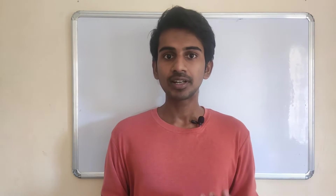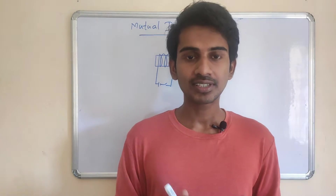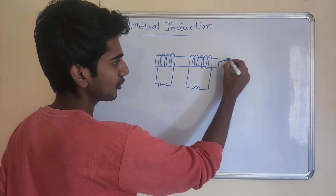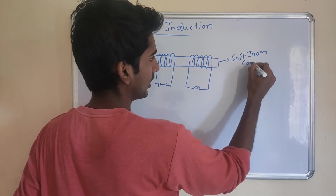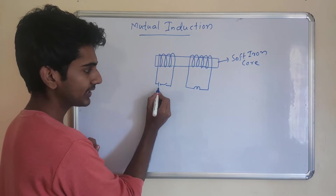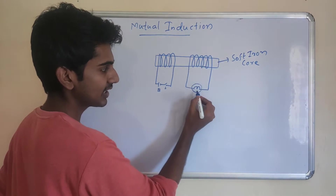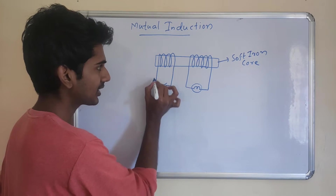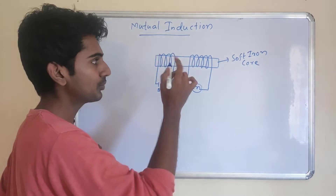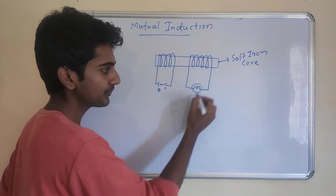First of all, Mutual Induction. It's a new topic called Transformers. Let's study Mutual Induction. Here we have a soft iron core. It has a winding, a battery connected, a switch, another coil connected, and a bulb connected. Now we are going to talk about this switch. When you close the switch, you have a current, and you have a magnetic field. The magnetic field is connected to this coil through magnetic flux, and an EMF is induced in the coil, lighting the bulb.